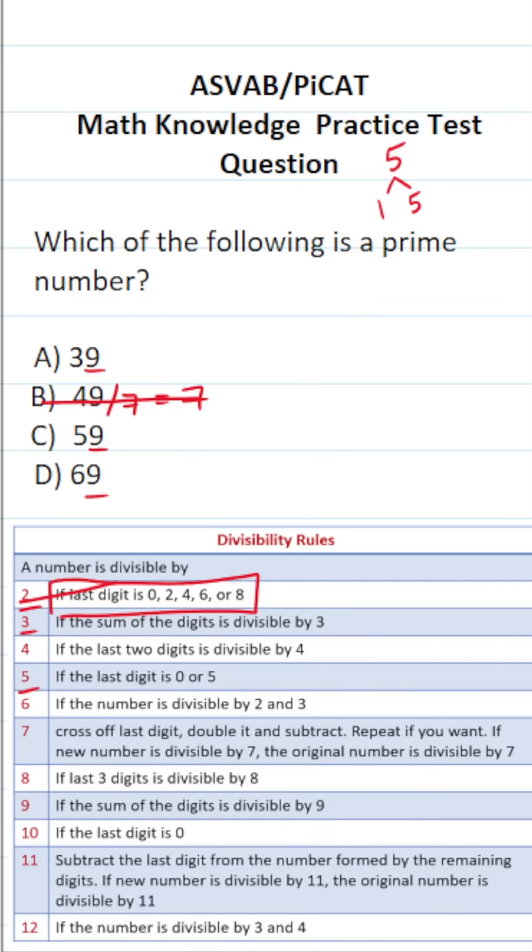Let's take a look at the divisibility rule for three. The divisibility rule for three says if the sum of the digits is divisible by three, then that number itself is divisible by three and cannot be prime. So let's start with A. We have the number 39. What is the sum of its digits?